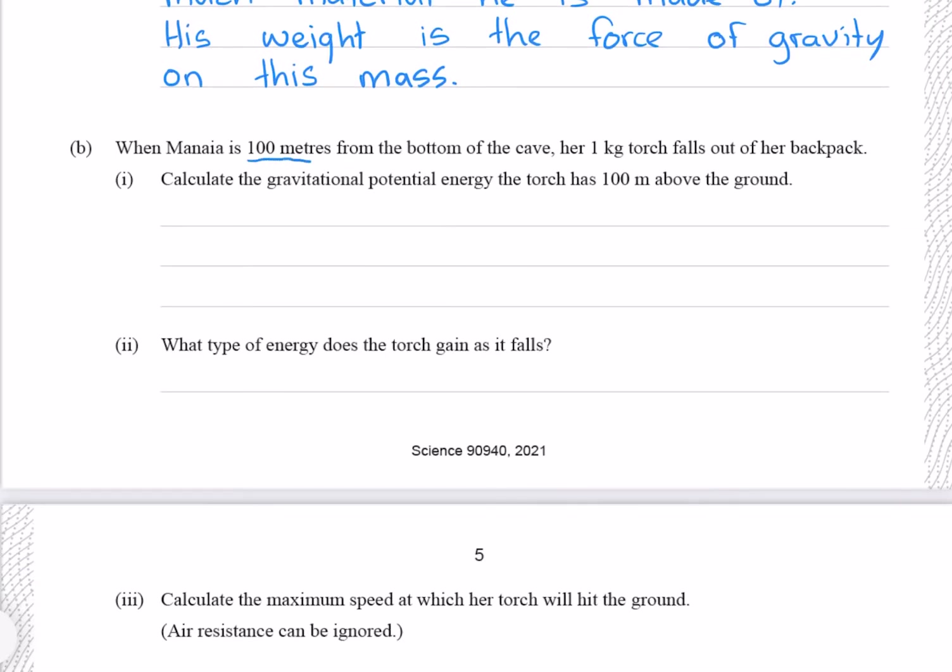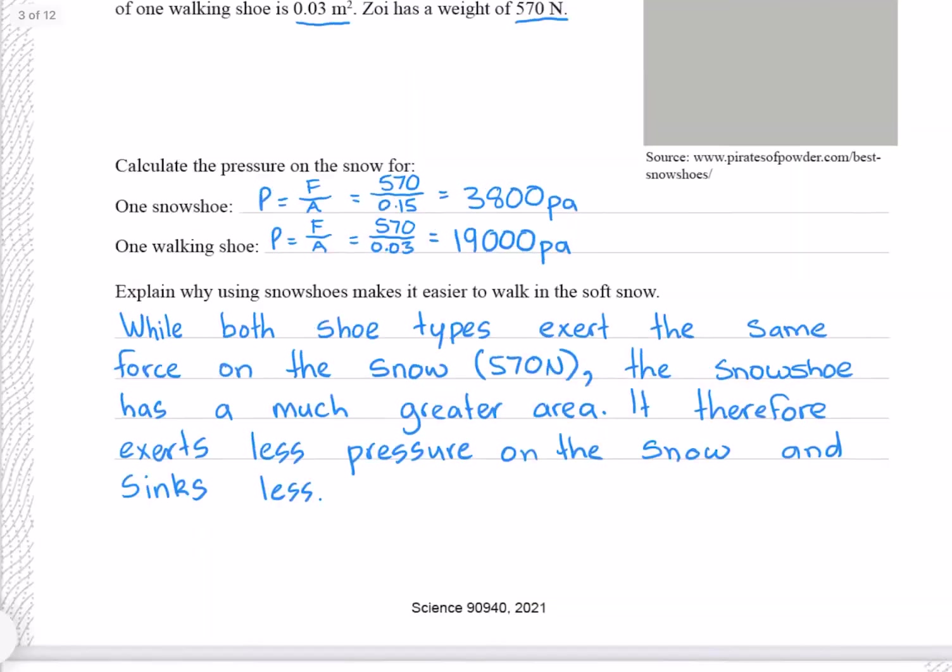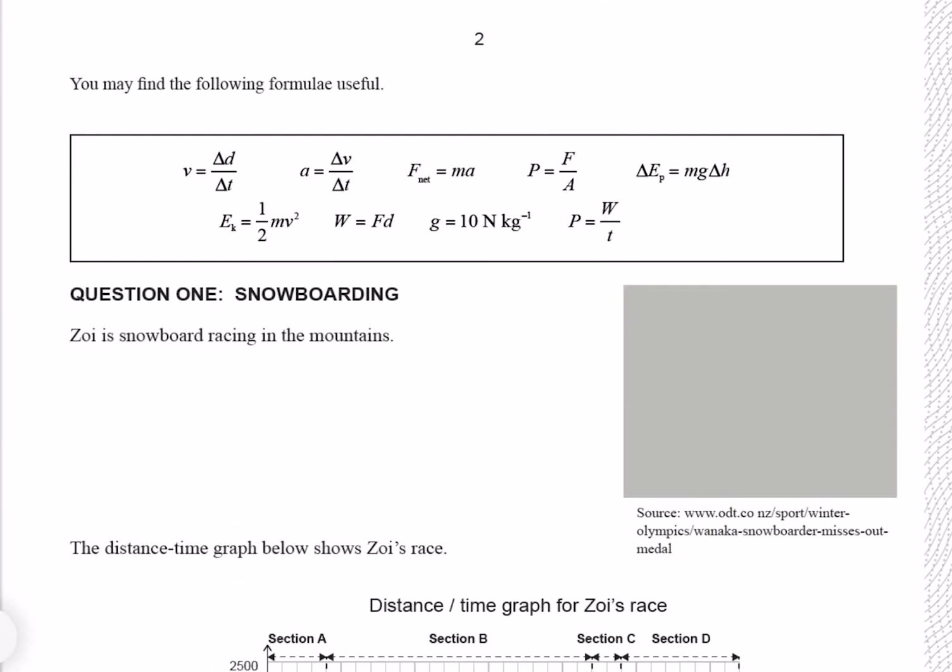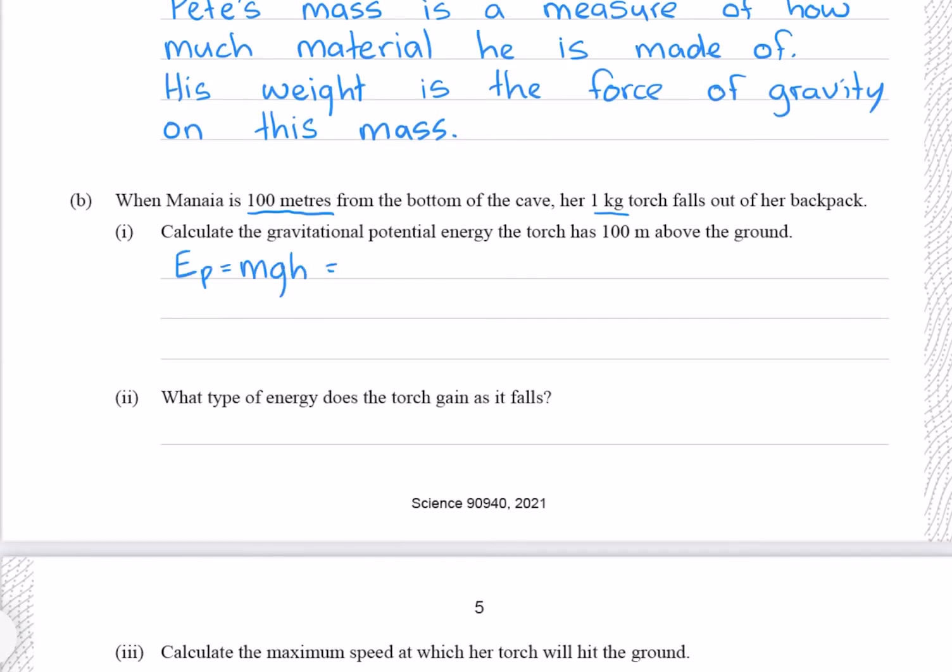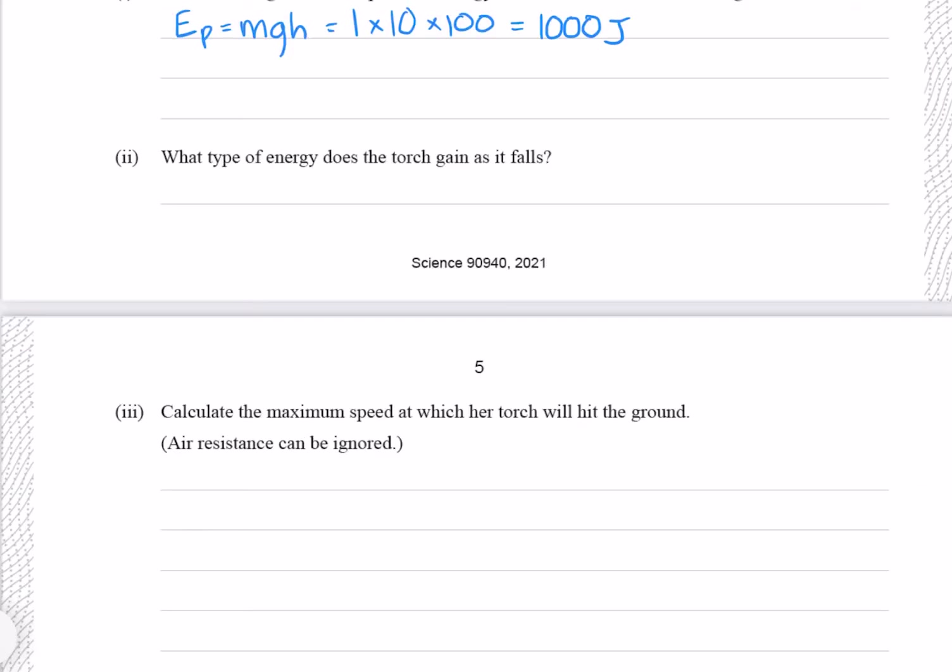When Manaya is 100 meters from the bottom of the cave, her 1 kg torch falls out of her backpack. Calculate the gravitational potential energy the torch has 100 meters above the ground. Our equation for gravitational potential energy is given to us. Our mass is 1 kg, our acceleration due to gravity is 10, and the height is 100 meters, which gives us 1000 joules. What type of energy does the torch gain as it falls? Which is of course kinetic energy.